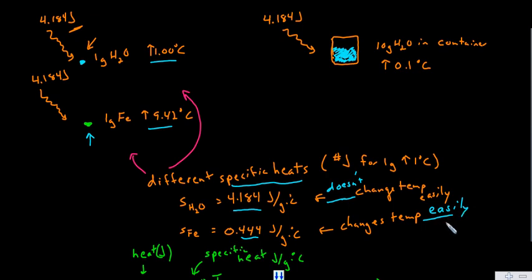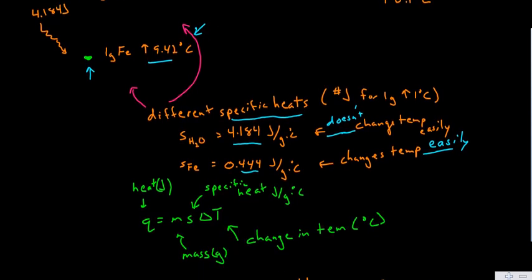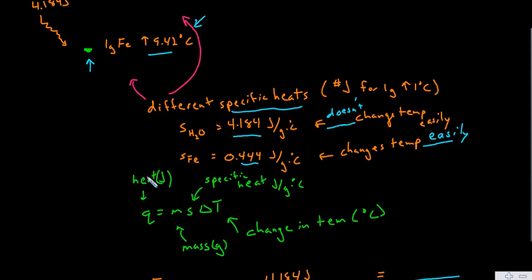And so we can actually calculate what these changes of temperature could have been from what we know about these substances using this very important equation. Here we go. Q is equal to M, S, delta T.